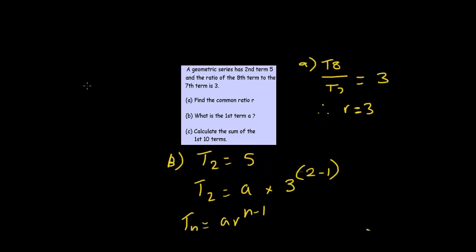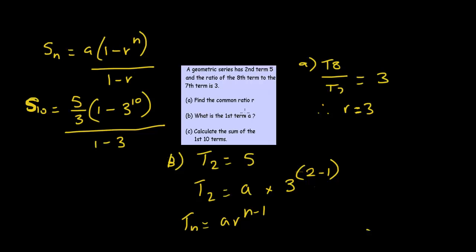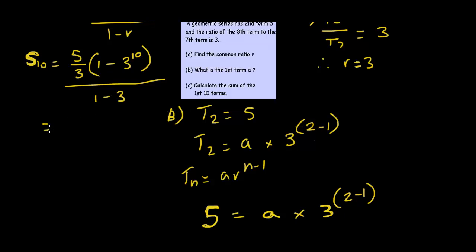Now we need to calculate the sum of the first 10 terms. The formula is: Sn equals A times bracket 1 minus R to the power of n bracket, over 1 minus R. So S10 equals 5 over 3 times bracket 1 minus 3 to the power of 10 bracket, over 1 minus 3. Solving this gives us 49,206 and two thirds. I hope this helped — see you next time!